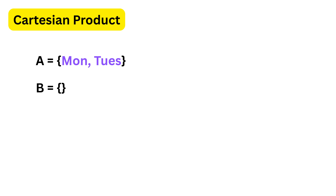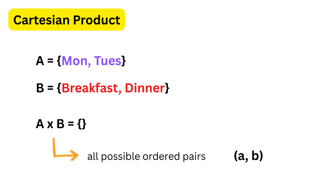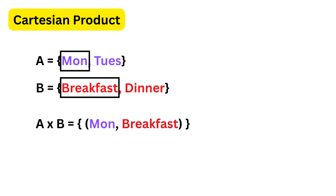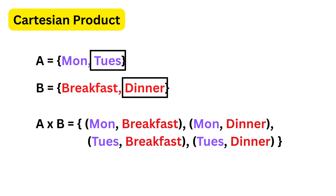Imagine set A contains days like Monday and Tuesday, and set B contains meals like breakfast and dinner. The Cartesian product, which we represent using A cross B, means we now form all possible ordered pairs where the first element always comes from set A and the second element always comes from set B. So we pair Monday with breakfast, Monday with dinner, Tuesday with breakfast, and Tuesday with dinner, and make a set out of it. Every day gets paired with every meal without skipping anything.